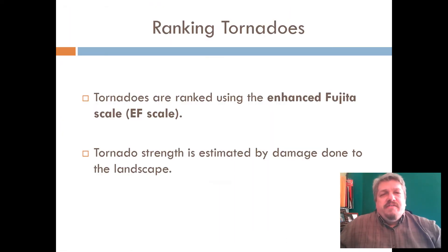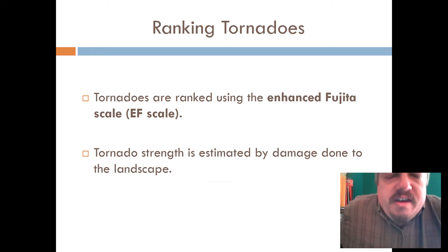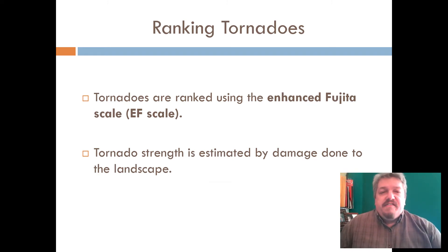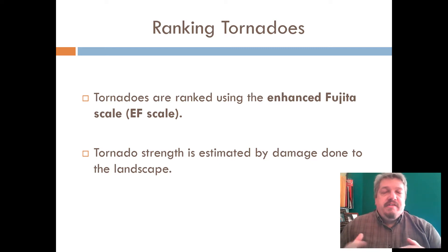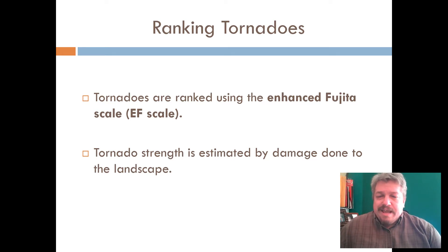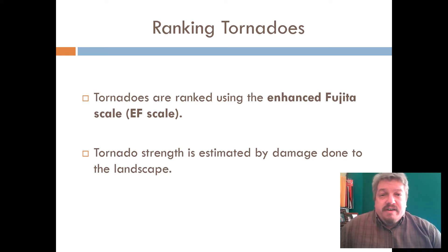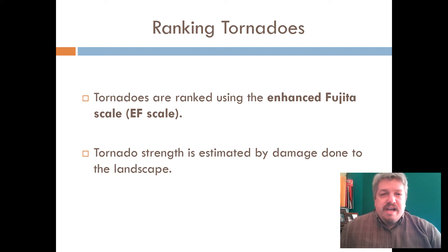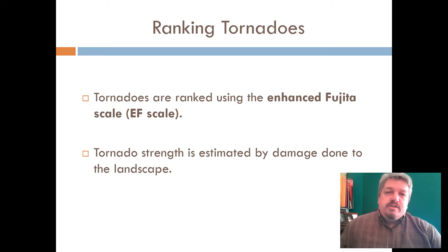The EF5 is the strongest. EF stands for Enhanced Fujita — Fujita was the scientist who developed the scale for rating tornadoes. Tornadoes happen so randomly and are so strong that it's very hard to actually measure the direct wind speeds. We're not always in the right place at the right time, and tornadoes are so strong that any measuring instrument, like an anemometer, might get destroyed.